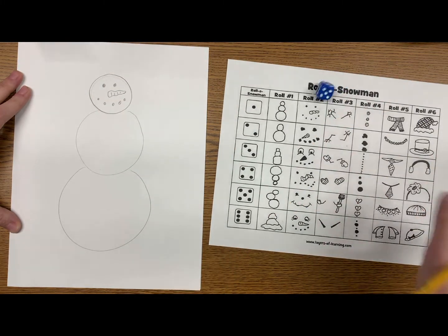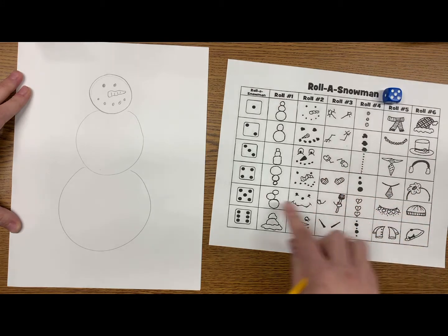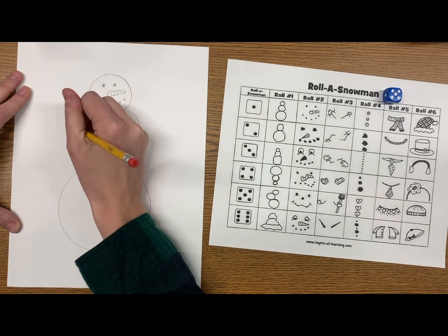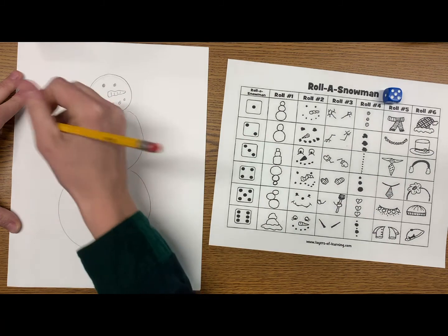Roll number three is the arms. I got five, so I'm coming down to the arms that match with number five. So these are some mittens. It looks like it's holding a broomstick.